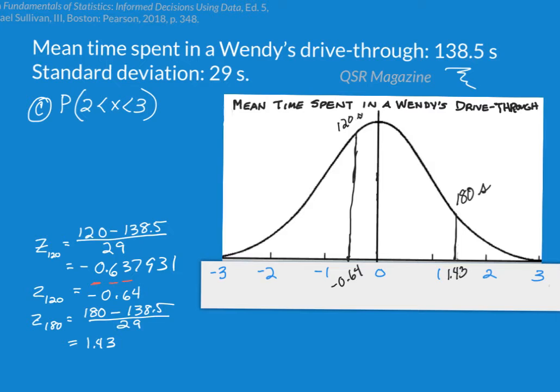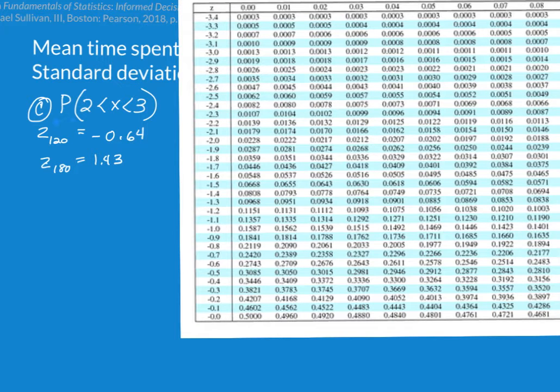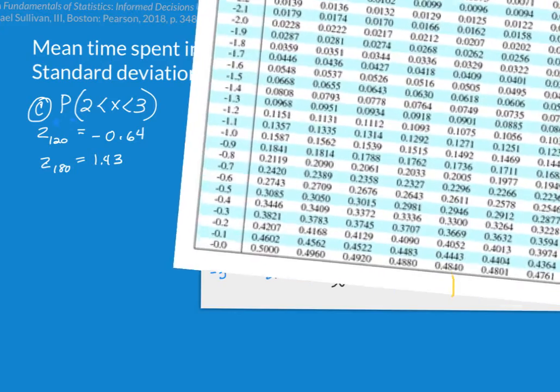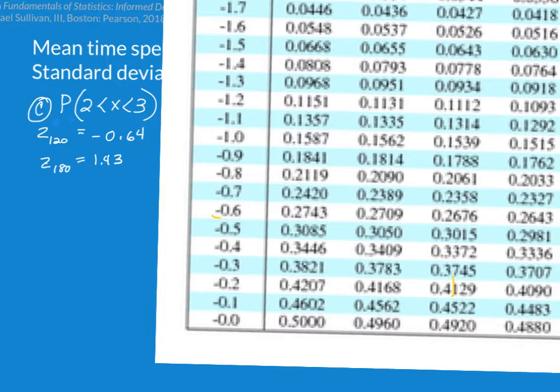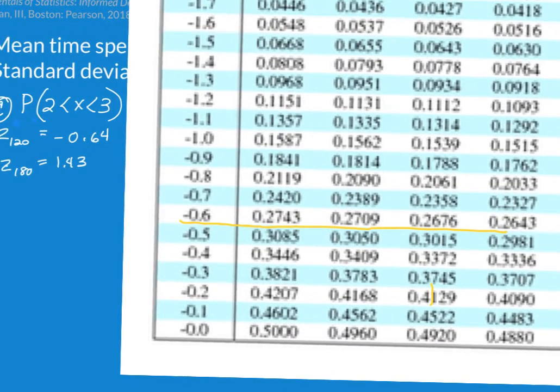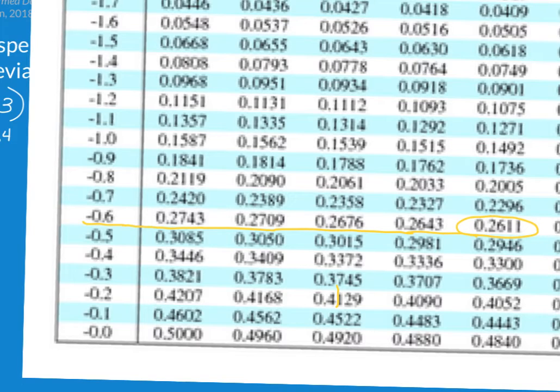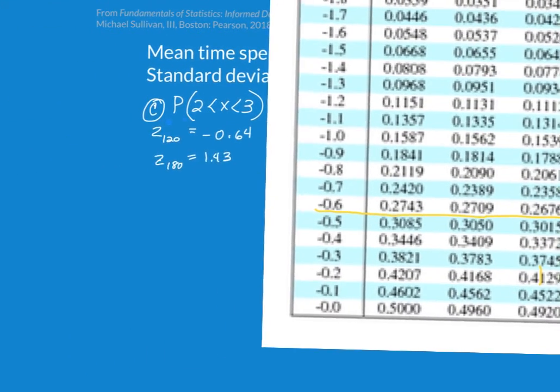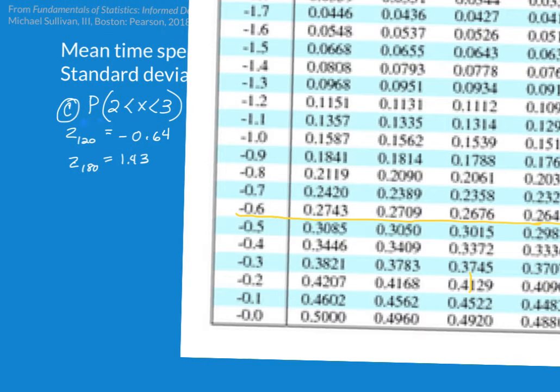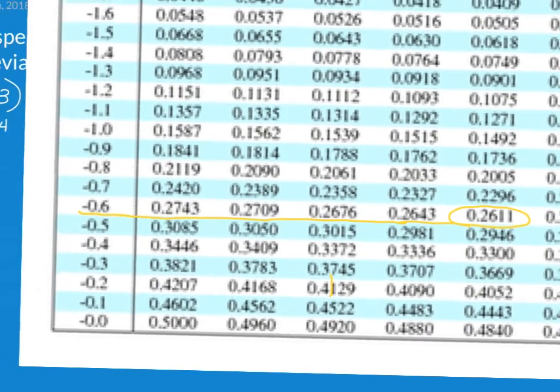What we do need to keep are both of the z-scores. Our first z-score is negative 0.64. So to find negative 0.64, I have to go down, lower down here. And there it is, negative 0.64. Gives me the area of 0.2611, the area under the curve there. So the area for the z-score of 120 is 0.2611.